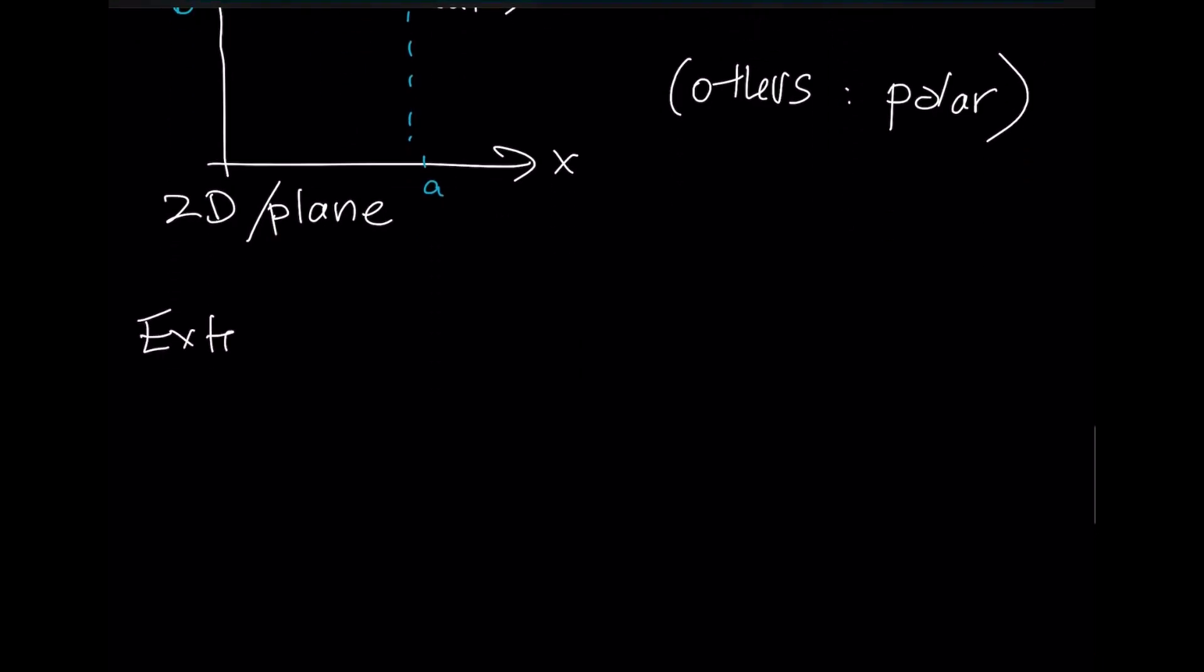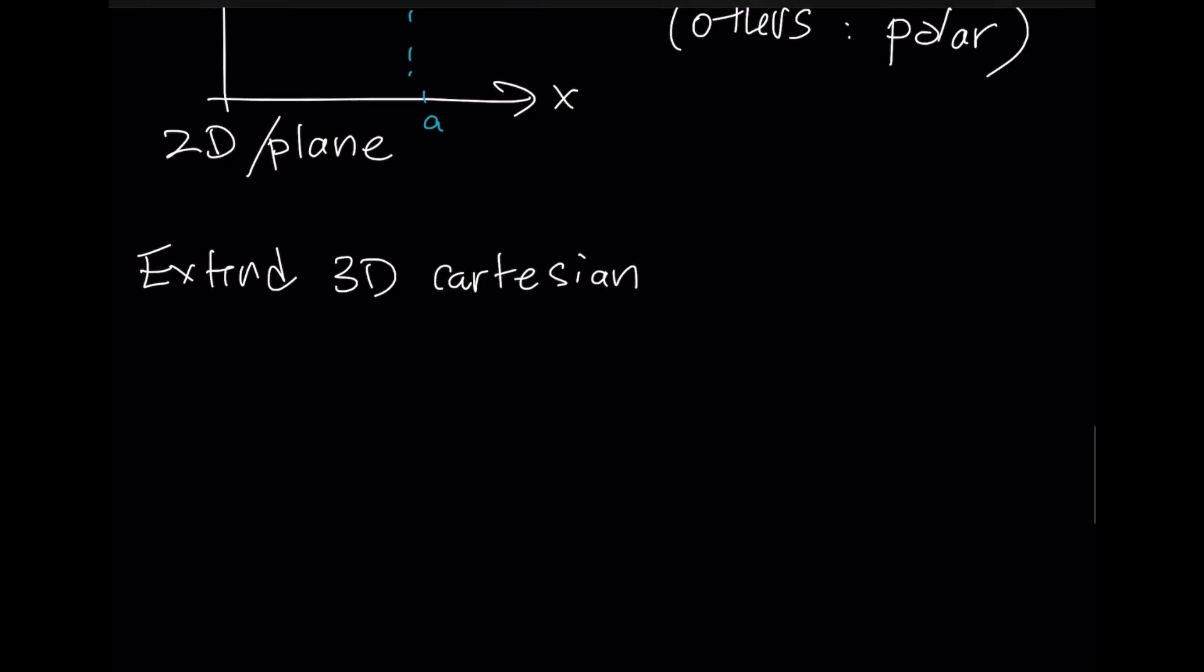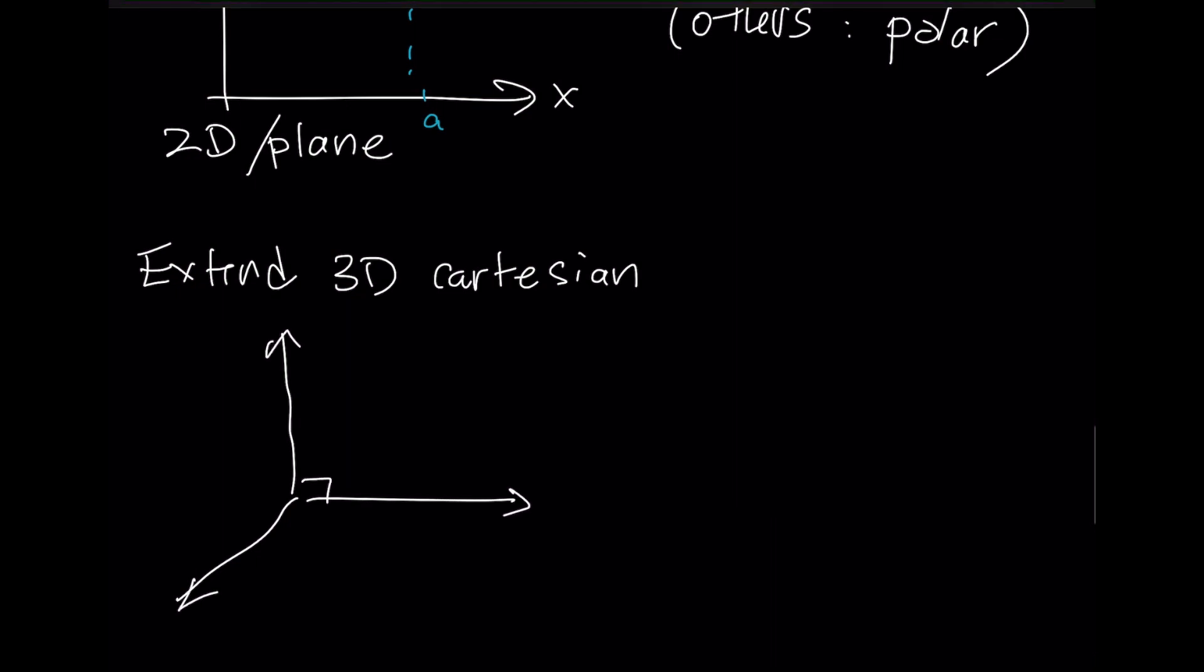So what you can do is you can extend this into a 3D Cartesian system. That means you're going to need three perpendicular axes. I'm just going to draw this set of three perpendicular axes like this. And what we need to do is figure out how to label these. For now, I'm going to write it as x, y, and z. And then I'm going to talk about a point. We'll call it a, b, and c. That point would be at some location a in the x-axis, b in the y-axis, and then c in the z-axis.